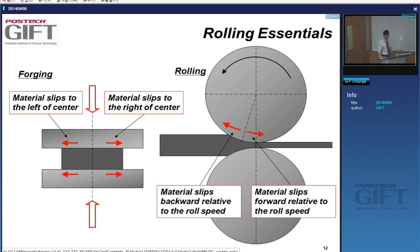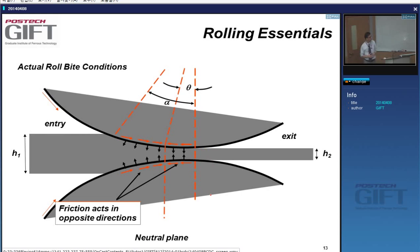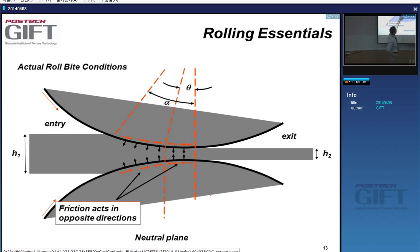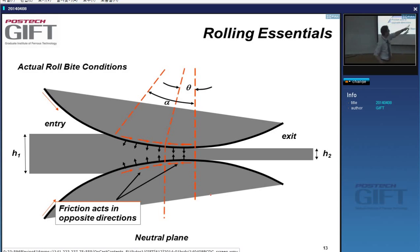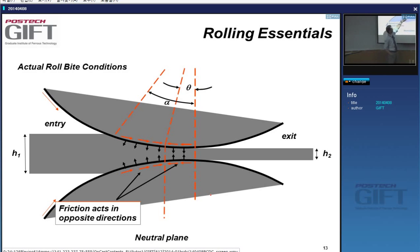In the roll bite there are many interesting things happening. We have a pressure — the rolls exert pressure on the strip — a roll bite angle alpha, our neutral point, and frictional forces that work in opposite directions on the left and on the right of the neutral point. The frictional force of the roll on the strip is backward before the neutral point because the strip moves backward, and forward after it.